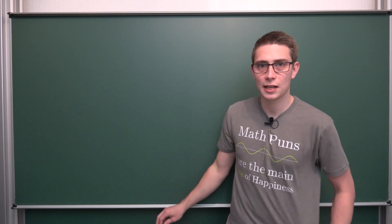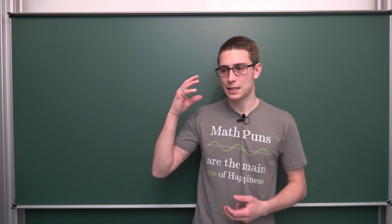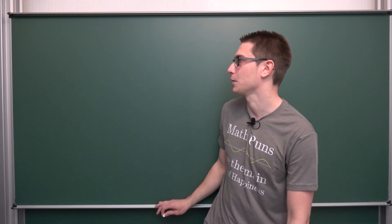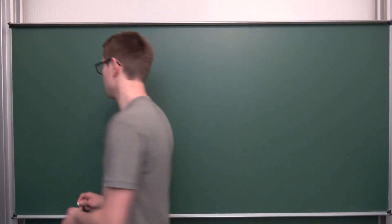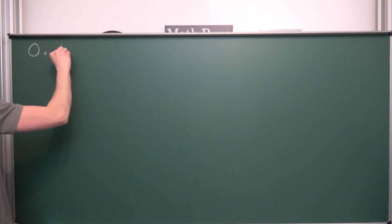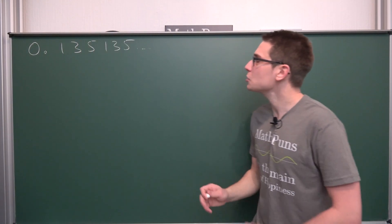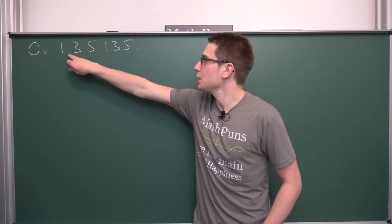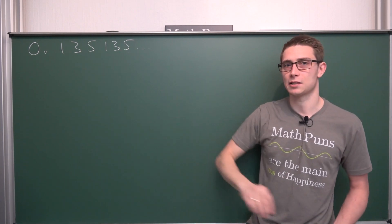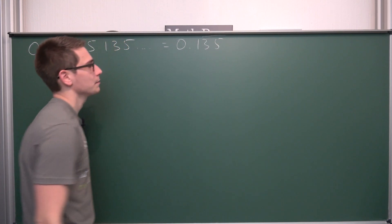So just imagine that you're a student sitting there learning about repeating decimals, and you just want to find out where to put the bar over the repeating periodic part. So I'm the teacher and I'm going to give you this number: 0.135135... As a student you are going to notice that one, three, and five are repeating, and then you would like to convert this into 0.1̄3̄5̄ — with a bar over it.